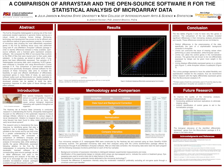The fruit fly is among one of the most extensively studied organisms in genomic history, serving as a robust model in studying human biology, and the parallels between the human and the fly can hold a key to a greater understanding of human response systems. An analysis of microarray data showing the most differentially expressed genes in the fruit fly following tissue injury was performed using both R and DNASTAR's ArraySTAR software package, in order to identify differences between a freely available open-source software and a licensed gene expression analysis software.